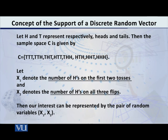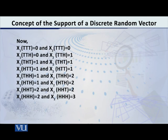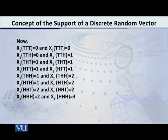Now we are able to define our variables x1 and x2. Let x1 denote the number of heads on the first two tosses, and x2 denote the number of heads on all three tosses. For the outcome tail-tail-tail, x1 equals zero because there is no head in the first two tosses, and x2 also equals zero because there is no head in all three tosses. Every single outcome is in front of you on the screen.